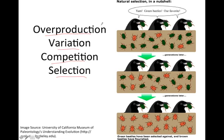So let's take a look at how this works. Overproduction means that there's more organisms born than will grow to adulthood. So there's all of these beetles and there's variation amongst them. So they're not all the same. There's some green beetles and in this case there's some orange beetles.